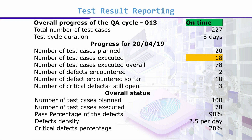Progress on 20th April 2019: number of test cases planned was 20, executed so far 18. Overall: 227 total, 78 executed. Number of defects today: 2; defects encountered so far: 10. Number of critical defects still open: 3.